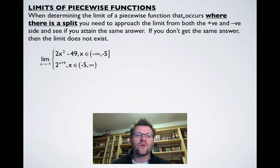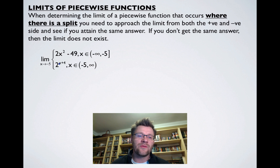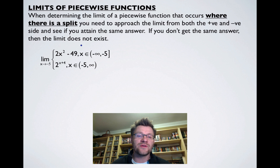Here the split is at x equals negative 5, and we're finding the limit as x approaches negative 5. The piecewise function is 2x² minus 49 when x is in (negative infinity, negative 5), and 2 to the power of (x plus 4) when x is in (negative 5, infinity). We substitute negative 5 into both pieces and compare the results.